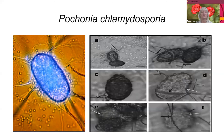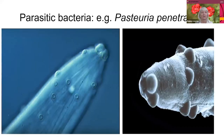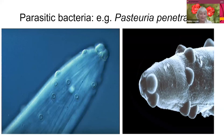Then we have a bacteria — Pasteuria penetrans — which is an interesting parasite whose spore latches onto the nematode and then kills the nematode from within. Product-wise, at the moment there is no product on the market for that one, but watch this space.